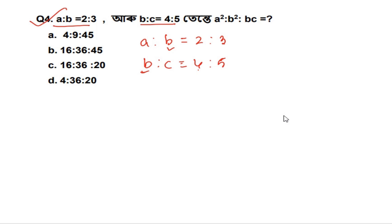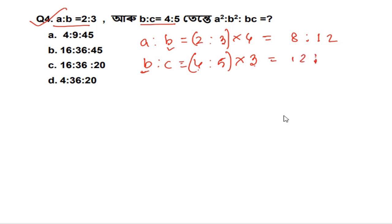Then B, when you align everywhere, if B is equal to 12, we multiply 4 into 3 to get 12, and 5 into 3 is 15. So A is to B is to C equals 8 is to 12 is to 15.